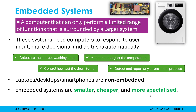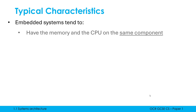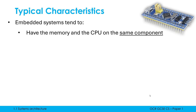Those three characteristics — smaller, cheaper, and more specialized — are potential exam answers, but there are a few more typical ones. Embedded systems tend to have the memory and the CPU on the same physical component — you might see this written as the same chip or the same circuit board. They are fused together on the same component, which helps keep it really compact.